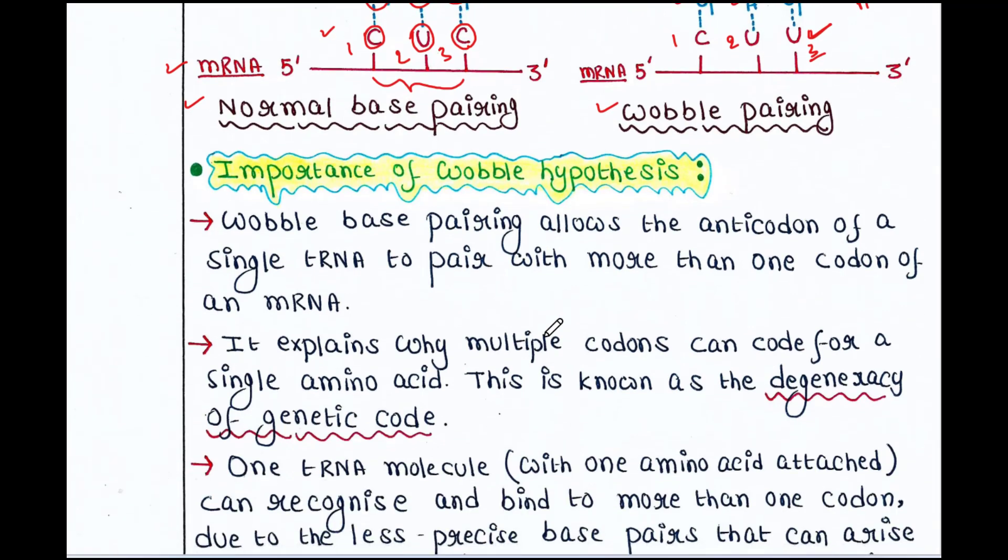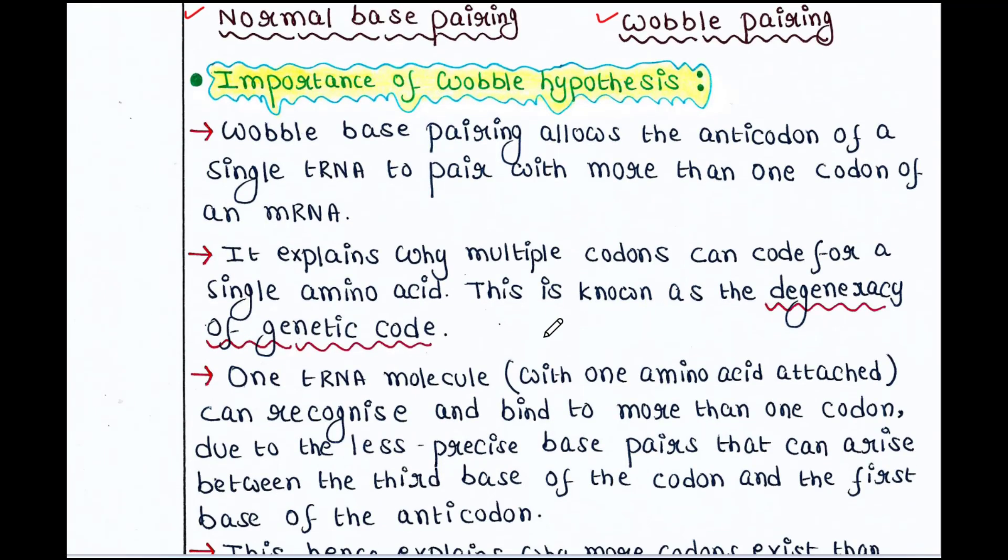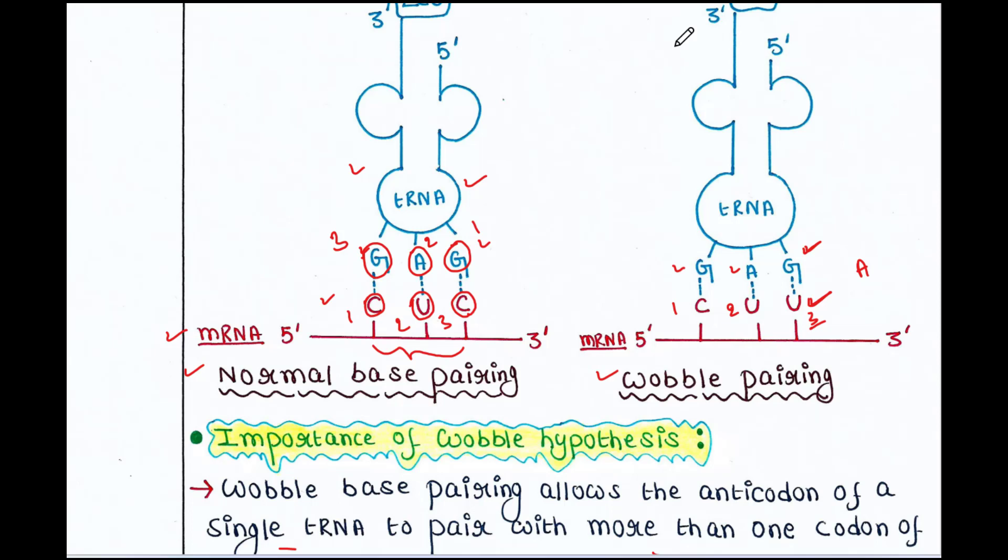Now, what is the importance of this wobble hypothesis? So, wobble base pairing allows anticodon of a single tRNA to pair with more than one codon of an mRNA. Like in this case, we have the anticodon in tRNA, GAG. So, GAG is a single anticodon. It pairs with the codon CUC as well as CUU. So, two codons are here which are interacting with the single anticodon.